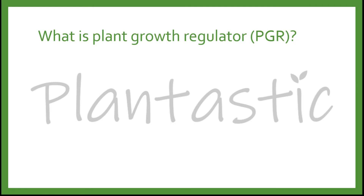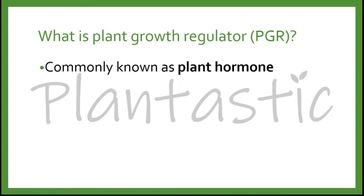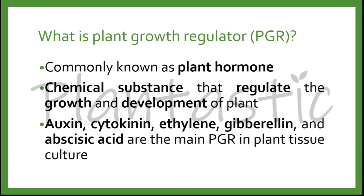What is plant growth regulator, PGR? It is commonly known as plant hormone. It is a chemical substance that regulates the growth and the development of the plant. There will be auxin, cytokinin, ethylene, gibberellin, and abscisic acid, which are the main plant growth regulators in plant tissue culture. Although there are a wide lot of plant growth regulators available, but these are the main PGR you can find in most of the papers.